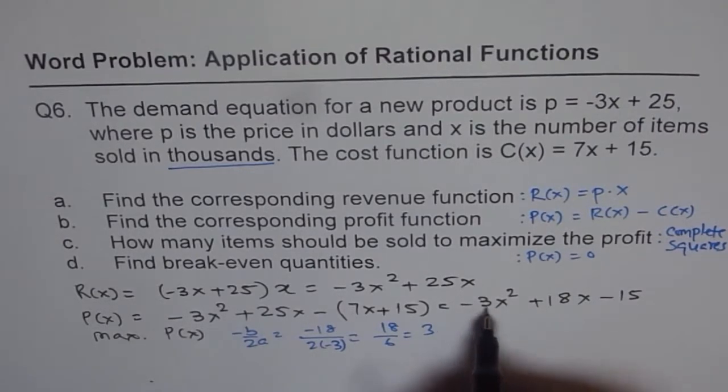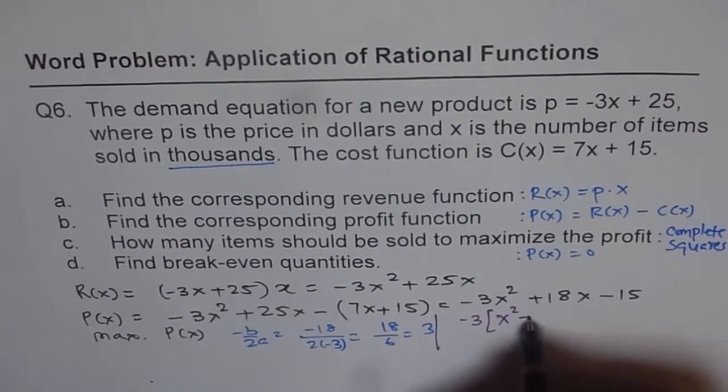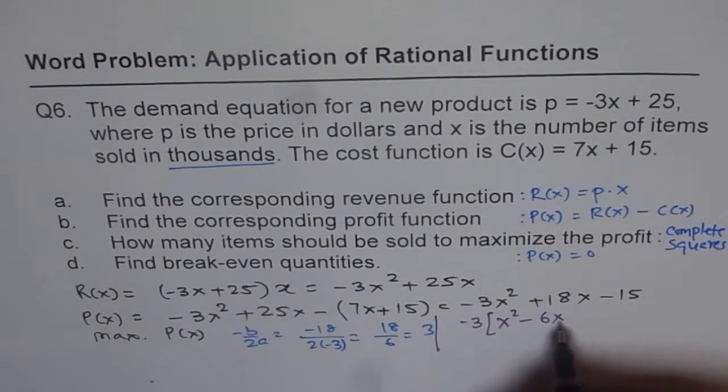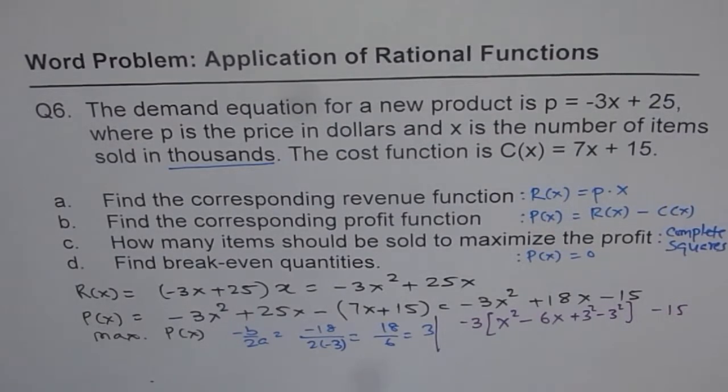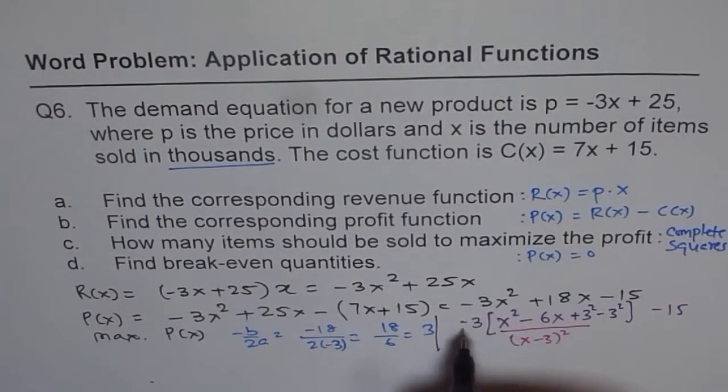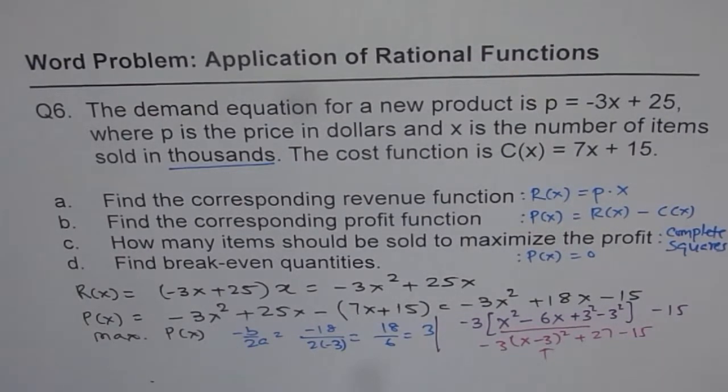First step will be, you have to factor minus 3. Let me just show you that also here. Minus 3, you are getting x squared minus 6x. And then what you have to do is, half of this, add and subtract square of that. That means half of 6 is 3, so add and subtract 3 square. Minus 15. So these first three terms form a perfect square, which is, of course, x minus 3 whole square. And when you open it, you will get minus 3 times this. And minus 3 times square of 3 is 9, so you get plus 27, minus 15. So you get that answer, 3.